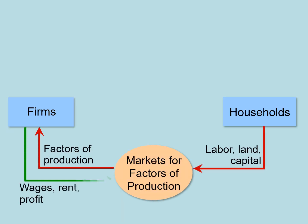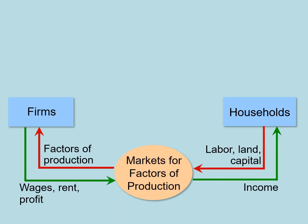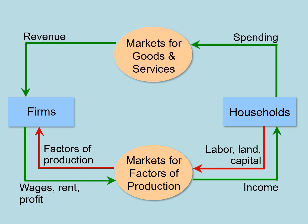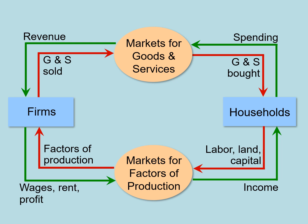This is a circular flow diagram, and it illustrates the connections and economic activity between households and firms in two markets: the market for goods and services and the markets for factors of production. This graphic illustrates economic activity, so let's think about how to measure said economic activity.